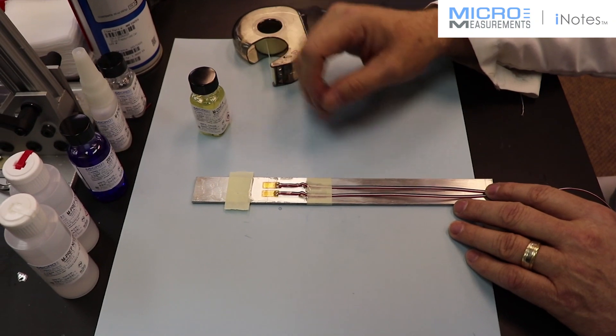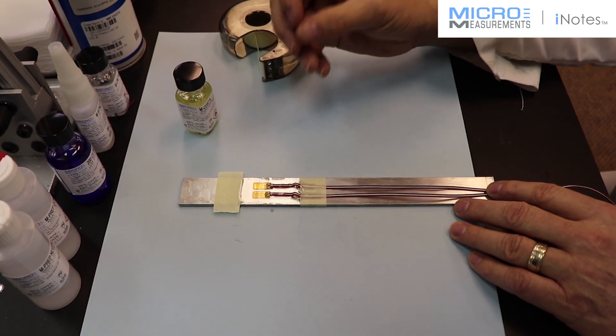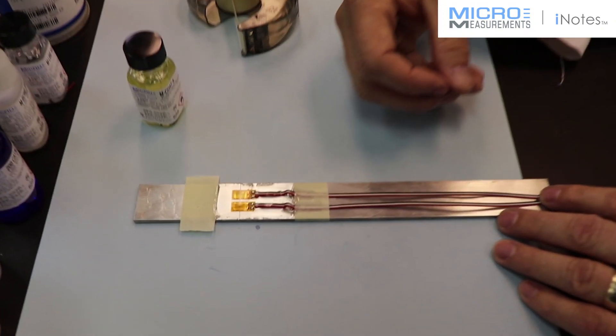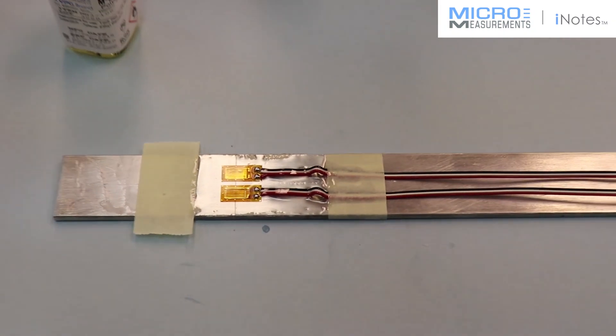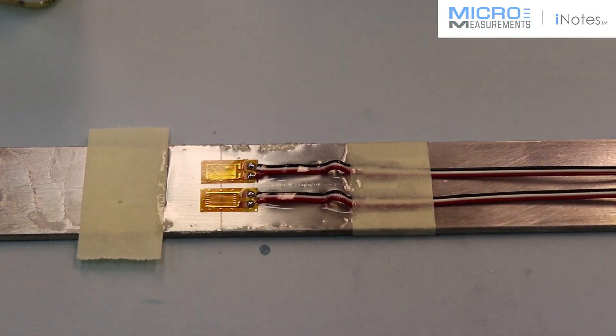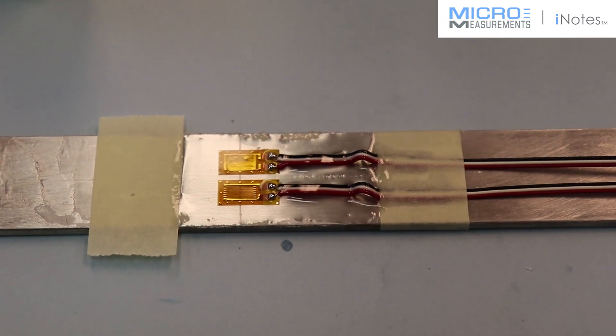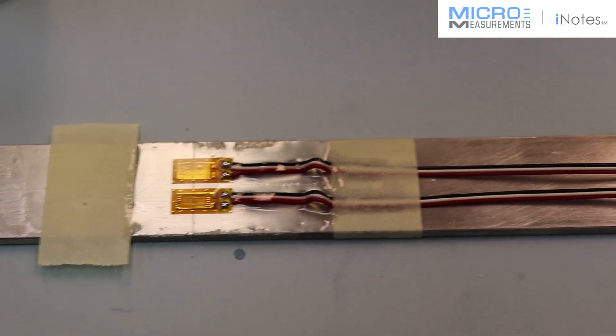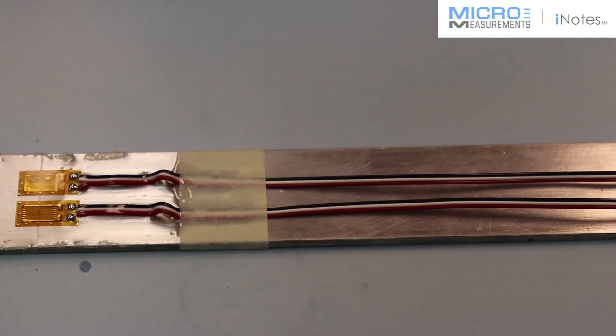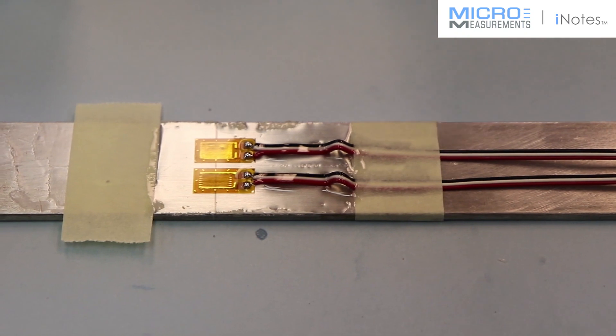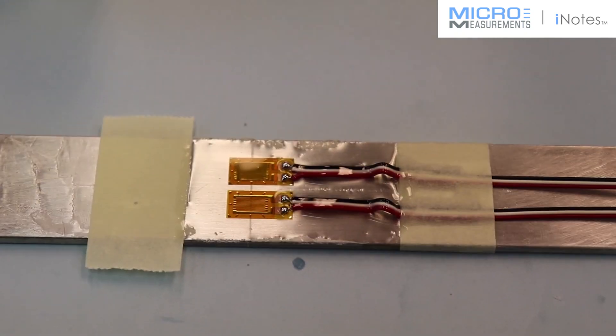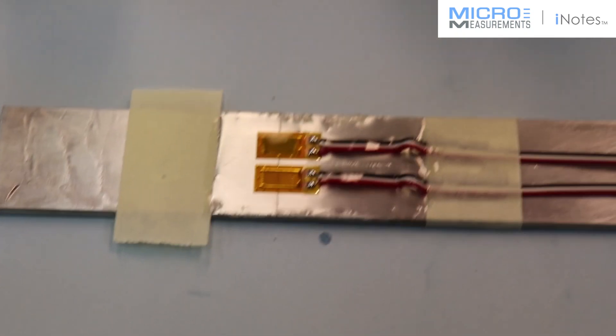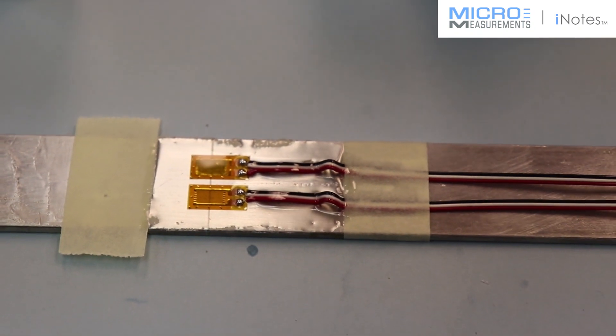And we're excited about all the possibilities that the advanced sensor technology will offer us. We can really push the limits now, both with respect to resistance of the strain gauge. Some of these patterns can go up to like 10,000 ohms and even higher. And also in the size, we can really push the limits, making the gauges smaller and smaller. So we're really excited about the technology, and we're excited about bringing it into our strain gauge workshops. Thank you for taking the time with us.